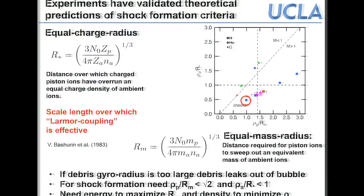Now looking at the actual shock: this summarizes what's needed to launch a magnetosonic shock in the laboratory, based on work by Bashurin more than 30 years ago. It puts the Larmor radius of the debris and ambient in relation to two scaling lengths: the equal-mass radius (essentially the size of the diamagnetic bubble), and the equal-charge radius.